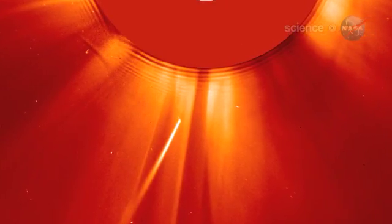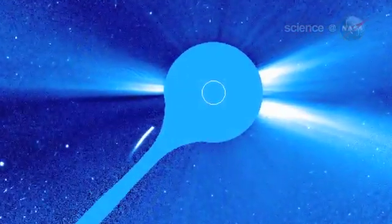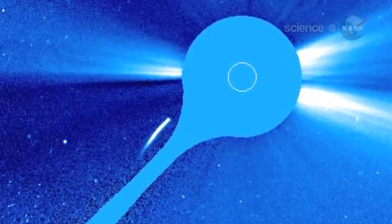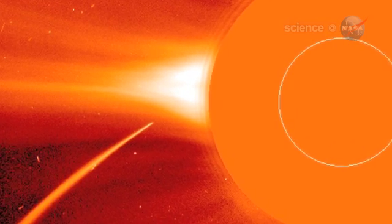Several Kreutz fragments pass by the Sun and disintegrate every day. Most, measuring less than a few meters across, are too small to see. But occasionally, a big fragment like this one attracts attention.